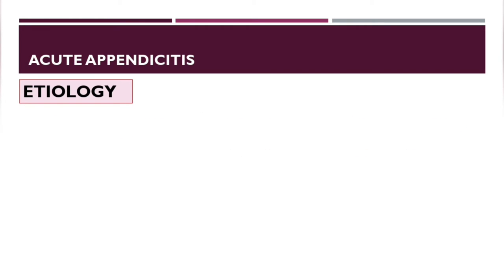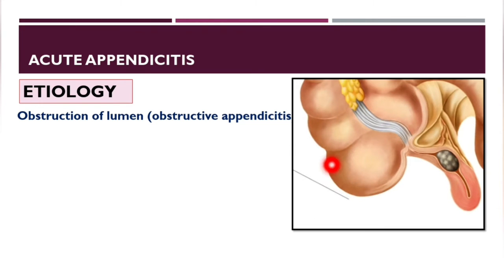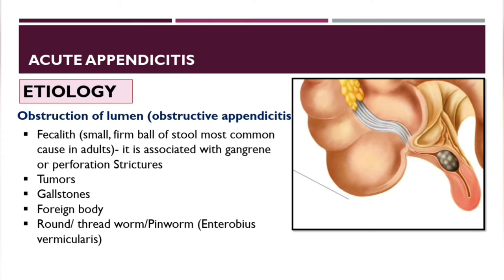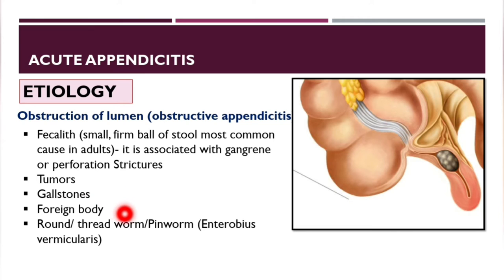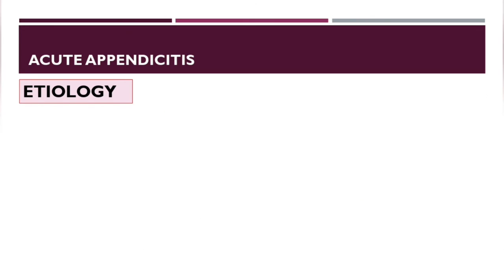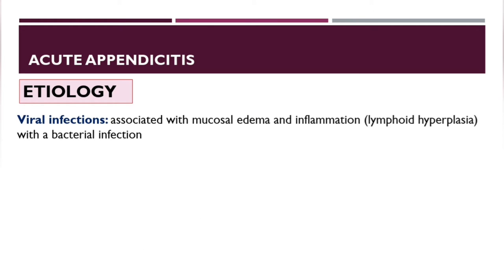Regarding etiology, appendicitis can occur due to obstruction of the lumen — obstructive appendicitis. Obstruction may be caused by a fecalith (a small ball of stool), which is the most common cause in adults and is associated with gangrene or perforation. Obstruction can also occur due to tumors, gallstones, foreign bodies like seeds, or adhesions at the base of the cecum.